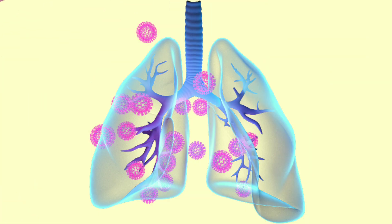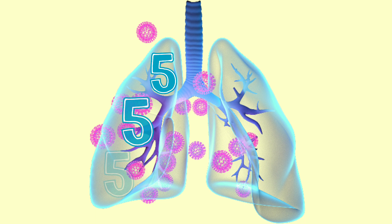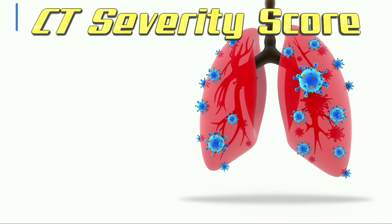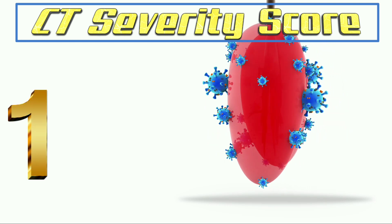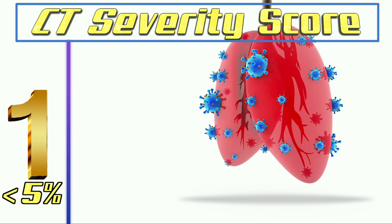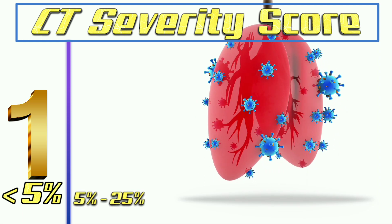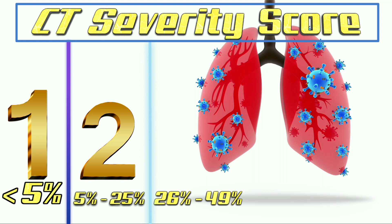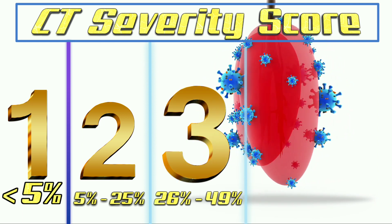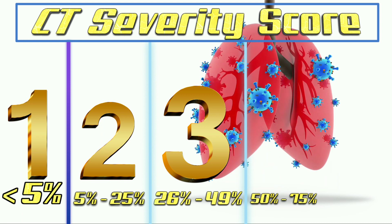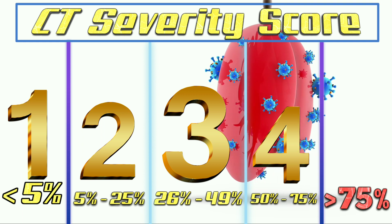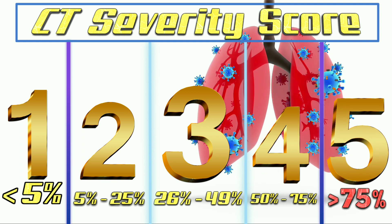Each lobe is graded with a score of one to five according to the degree of infection, giving a maximum total of 25 for all five lobes. The lobe is graded one if there is less than five percent infection. A score of two means five to twenty-five percent is affected, three means twenty-six to forty-nine percent, four means fifty to seventy-five percent infected, and five — the most dangerous — means infection beyond seventy-five percent.